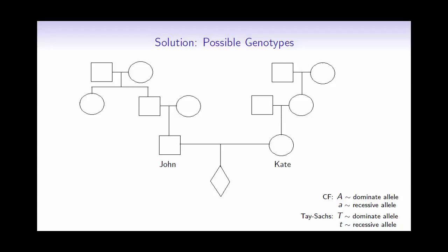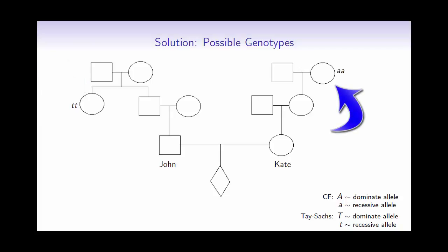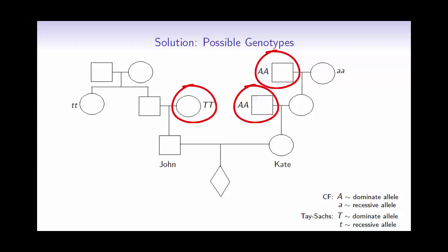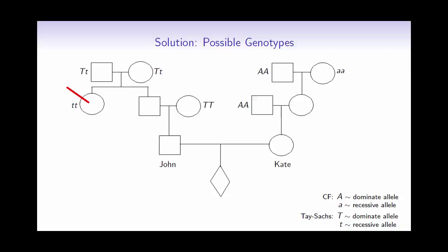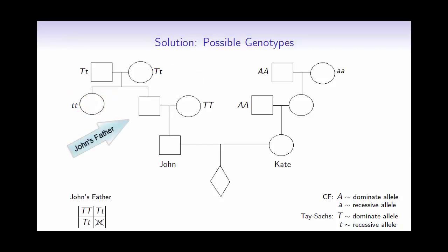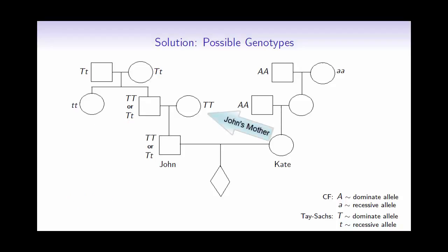Let's start by drawing the family tree and filling out some of the possible genotypes. It was John's paternal aunt who died of Tay-Sachs, and Kate's maternal grandmother who had cystic fibrosis. Also, everybody marrying into the family does not carry any of the diseases. If John's paternal aunt died of Tay-Sachs, that means her parents must both have been carriers. Since John's father did not die of Tay-Sachs, there are two options for his genotype.